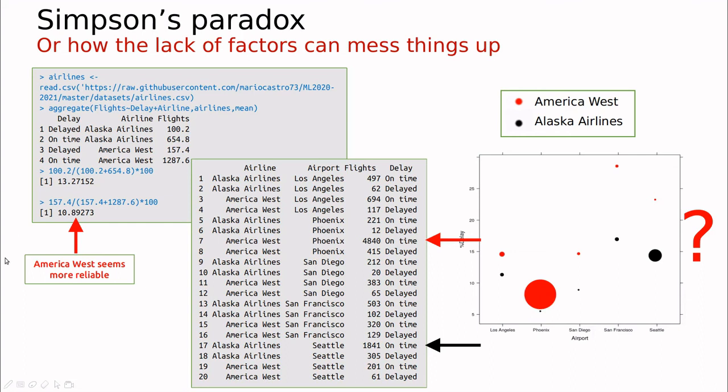You would say that the reds are the winners, which is what we did here. But if you compare airport by airport, I would say that this is not true and actually interactions matter. Basically, I would say that Alaska Airlines is better than America West. Airport by airport it's more reliable in all the cases. So the moral of this story is that you have to be very careful with factors and we have to be very careful with interactions. And I'm going to devote another video for that.